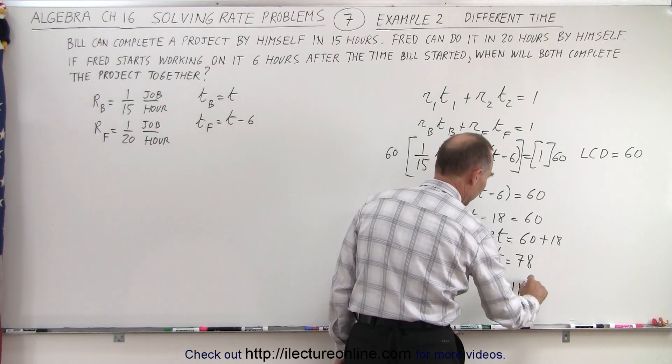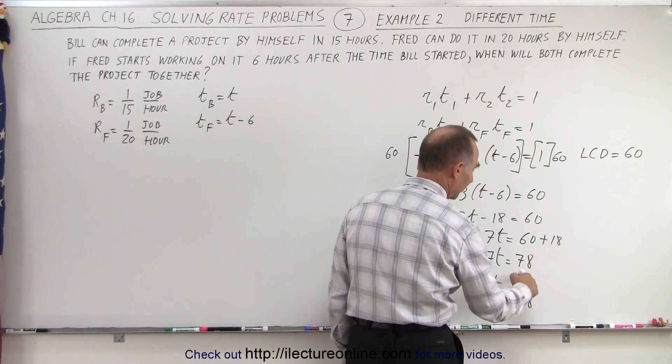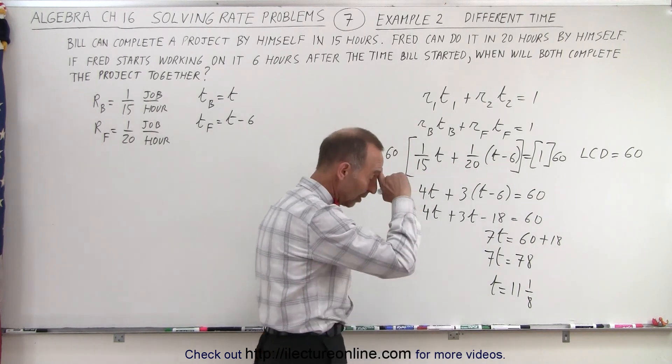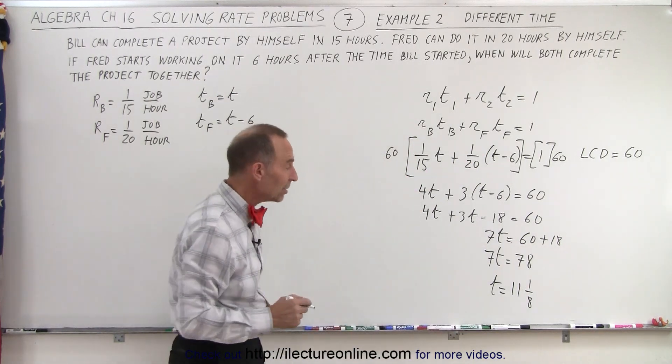So we have 7t is equal to 78 or t is equal to, when we divide both sides by 7, that would be 11 and 1/8 because 7 times 11 is 77 plus 1 is 78 over 8. So 11 and 1/8 of an hour.